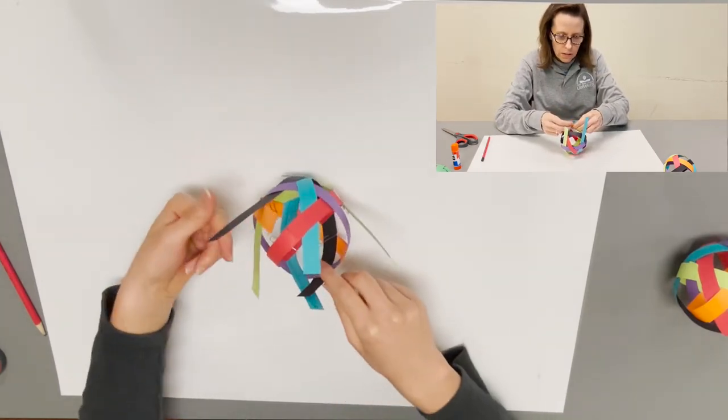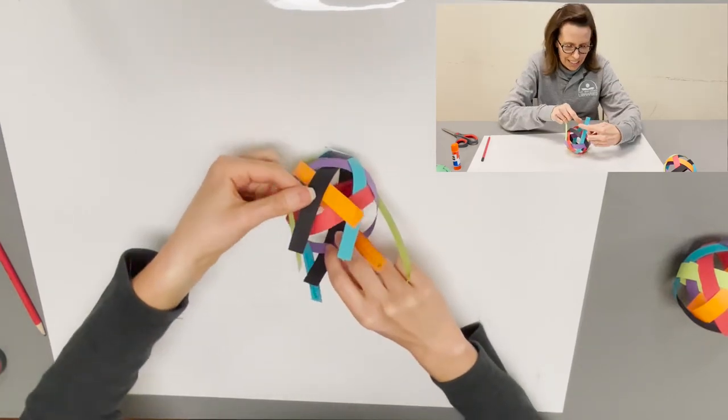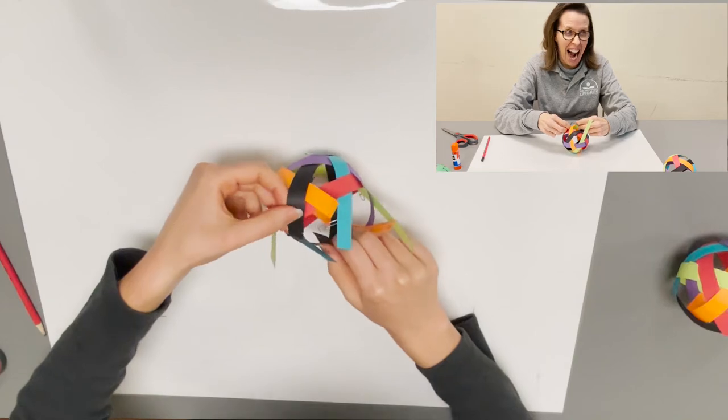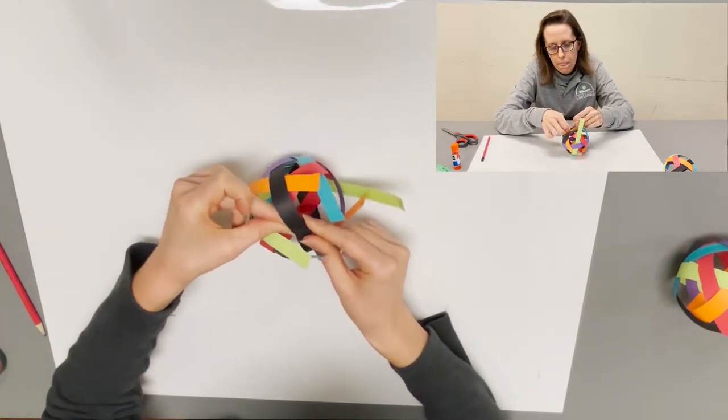The next one is your black, which is going to come over that red circle. And again, the tabs go inside with the numbers.